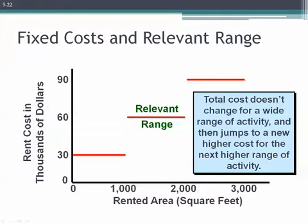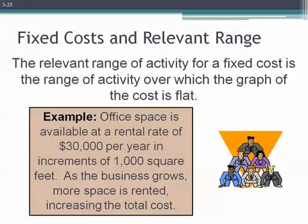When we talk about fixed costs, it's important to keep in mind our concept of the relevant range. We can even view fixed costs as sort of step variable. The difference between a step variable cost and a fixed cost is that we're talking about very wide ranges of activity. For instance, if we have a retail store, warehouse, or factory and want to increase space, we have to rent additional chunks of space in large blocks. For example, if office space is available at a rental rate of $30,000 per year in increments of 1,000 square feet, as our business grows and more space is rented, our total fixed cost increases. We have to add it in large increments — we can't just rent another 10 or 20 feet as needed.